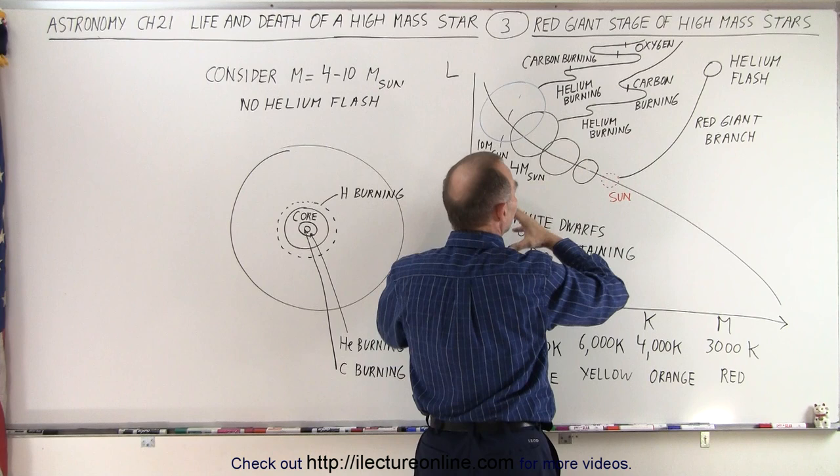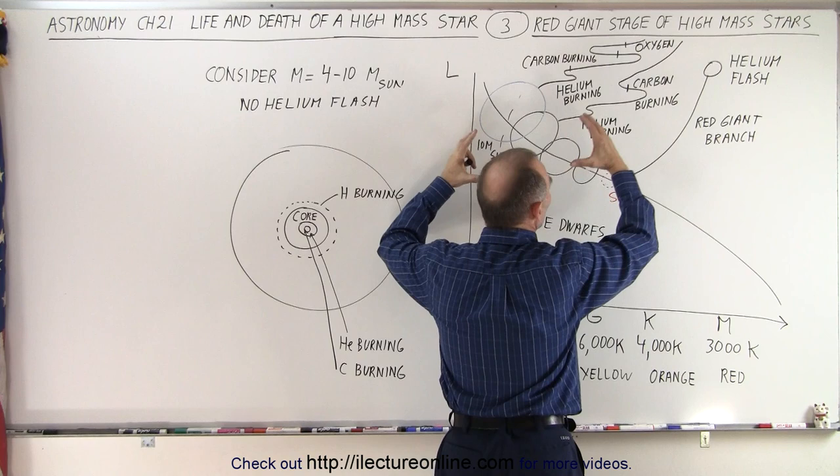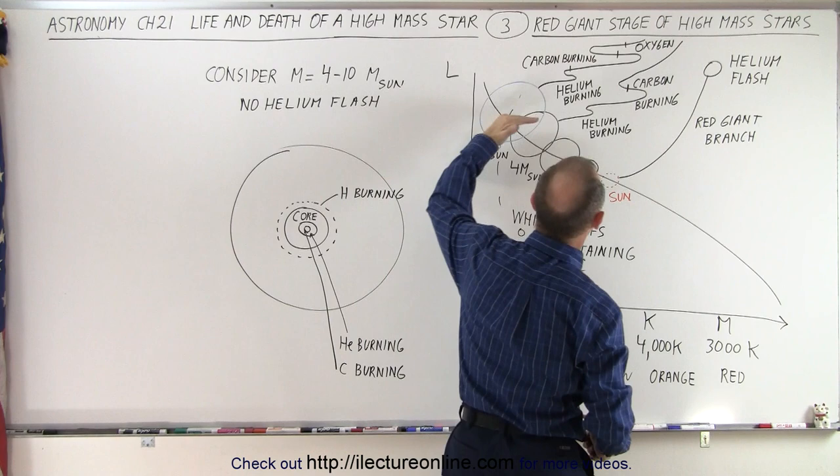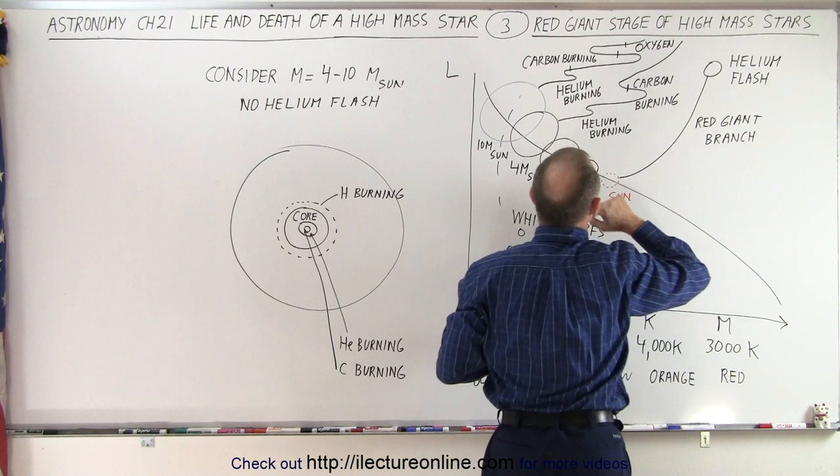So for stars 4 times the mass of the sun, they begin to start helium burning, so the star begins to swell up in size, it becomes brighter, and it becomes redder, because as it grows in size, the surface begins to get cooler, and that's why the movement is fairly horizontal across the HR diagram, before it begins to climb up into the red giant stage.